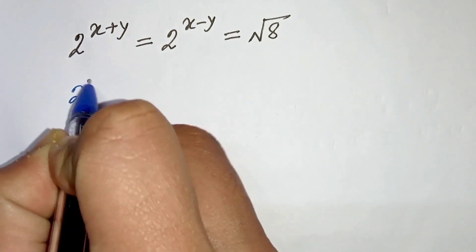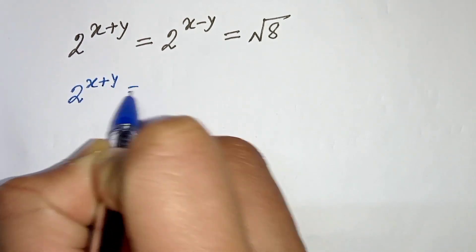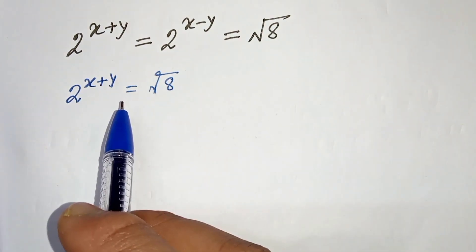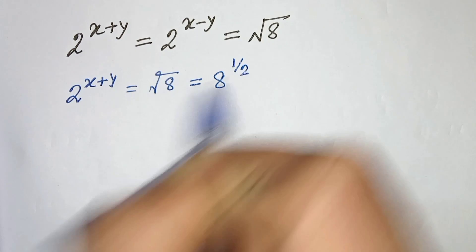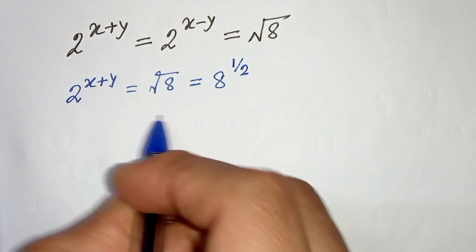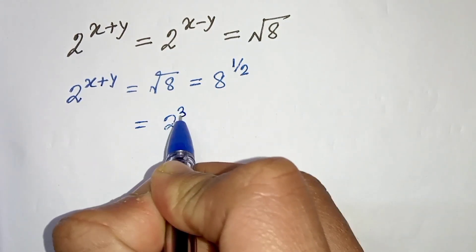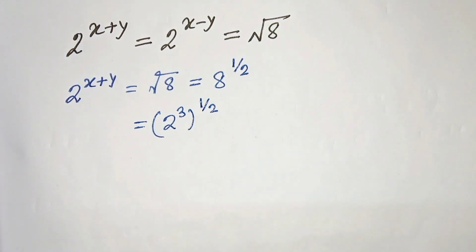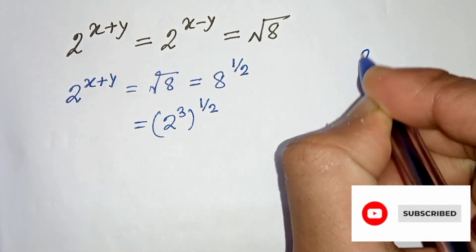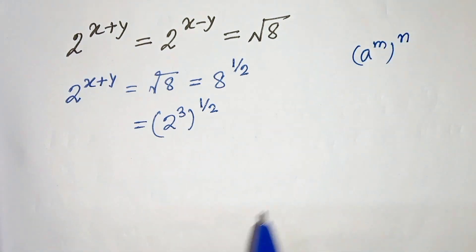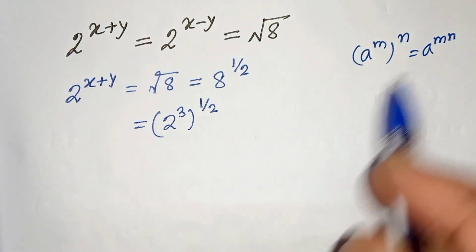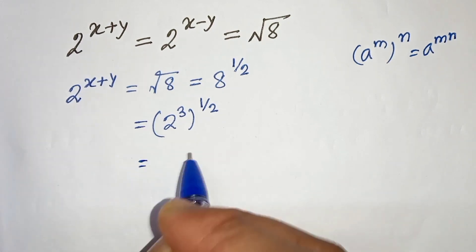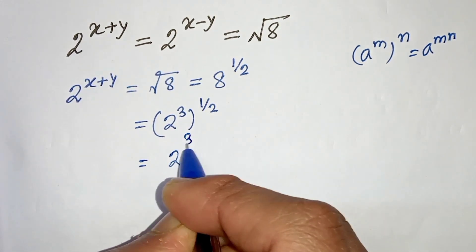We are given 2 to the power x plus y is equals to root 8. We can write root 8 as 8 to the power half. And again, we can write 8 as 2 cubed, to the power half. We know that a raised to the power m, power n can be written as a raised to the power m times n. So let's apply this here — we will get 2 to the power 3 by 2.